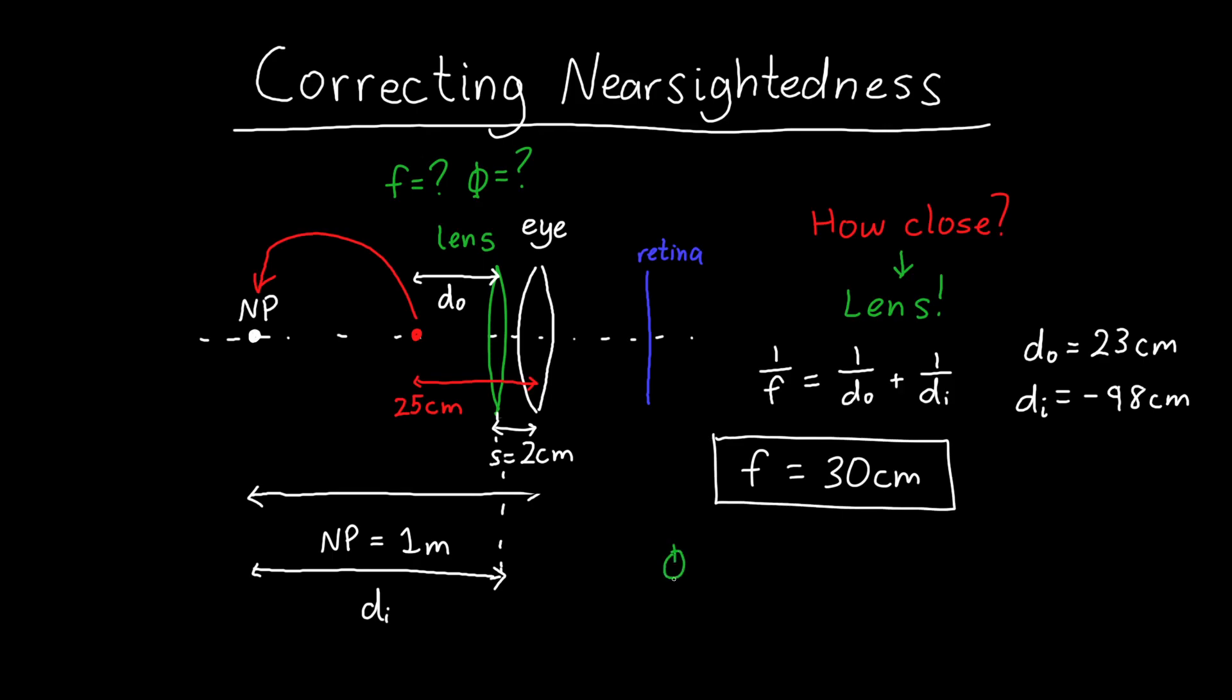And if we wanted to find the optical power, we know that the optical power is just 1 over F. And so it's equal to 1 over 30 centimeters. But conventionally, we take optical power to be in inverse meters or diopters. So I'm going to put 0.3 meters on the bottom. And so this is about 3.33 diopters or inverse meters.